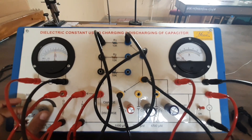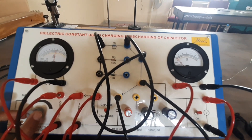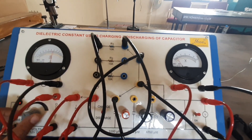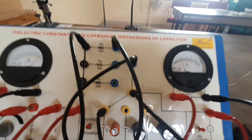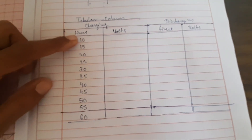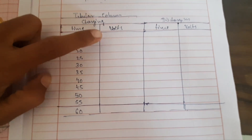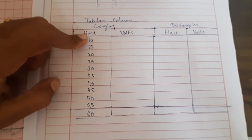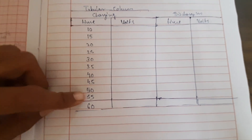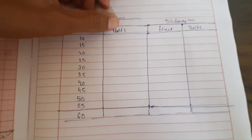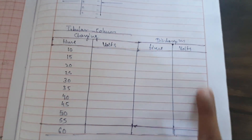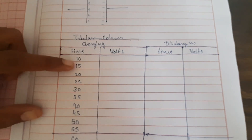You can see the voltage increasing rapidly and the current decreasing. Here is the tabular column to note down time and voltage: take readings at each time interval of 5 seconds — 5, 10, 15 seconds — up to 60 seconds. Measure the corresponding voltage for each time. For discharging, similarly note down the time and voltage for each 5-second increase.